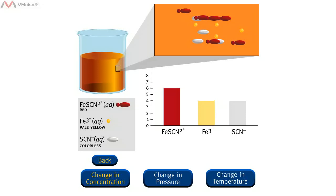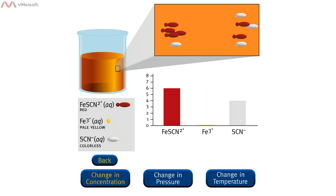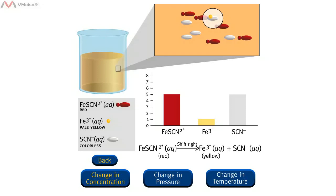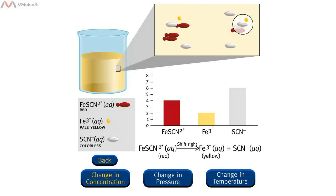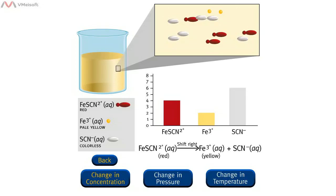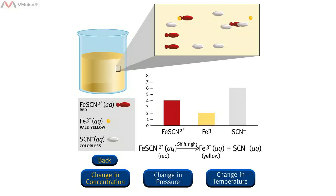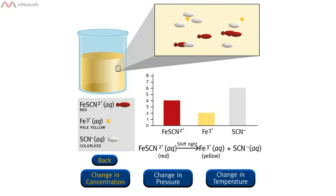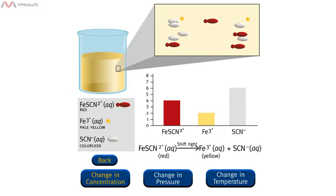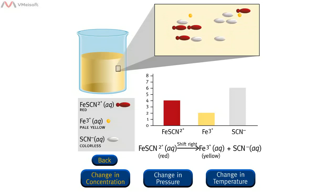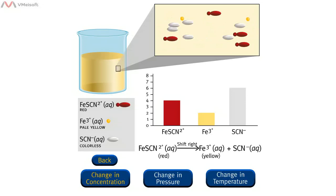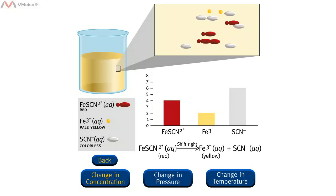When iron 3+ ions are removed from the solution, the system shifts from left to right to replace some of the iron 3+ ions. As the system shifts to the right, the concentration of iron thiocyanate ions, Fe(SCN)²⁺, decreases. The red solution turns yellow due to the decrease in concentration of the red iron thiocyanate Fe(SCN)²⁺ ions and the formation of the yellow iron 3+ ions.